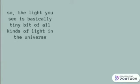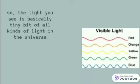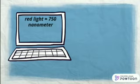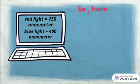So the light you see is basically tiny bits of all kinds of light in the universe. The red color has the longest wavelength and the blue one has the shortest wavelength. You might know that red light has 750 nanometers and blue light has 400 nanometers.